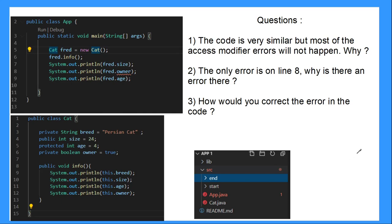So knowing what we talked about last video, see if you can answer this question. So hopefully you've stopped the video and you've answered this question. So the code is very similar, but most of the access modifier errors will not happen. Why? Well, this is because we removed this static modifier.